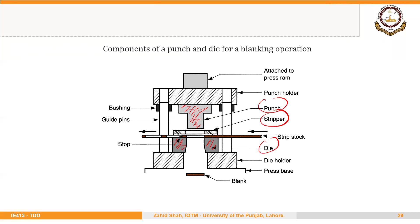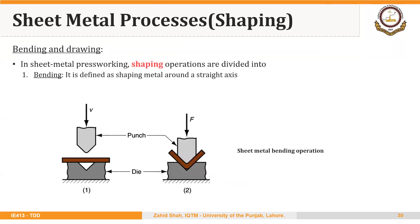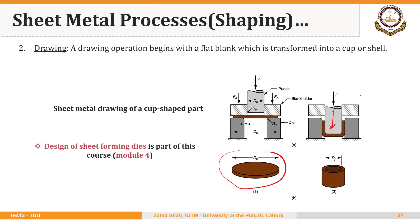These are the components of production tooling for sheet metal blanking. The second category of sheet metal or stamping operations is the shaping processes — the first was cutting processes. One example of shaping processes in stamping is bending, where we have a straight blank that is bent at some angle. Yet another example is sheet metal drawing or deep drawing, where a starting blank is drawn into the die. The design of this type of stamping tooling is part of this course, and we will discuss it in module four in detail.